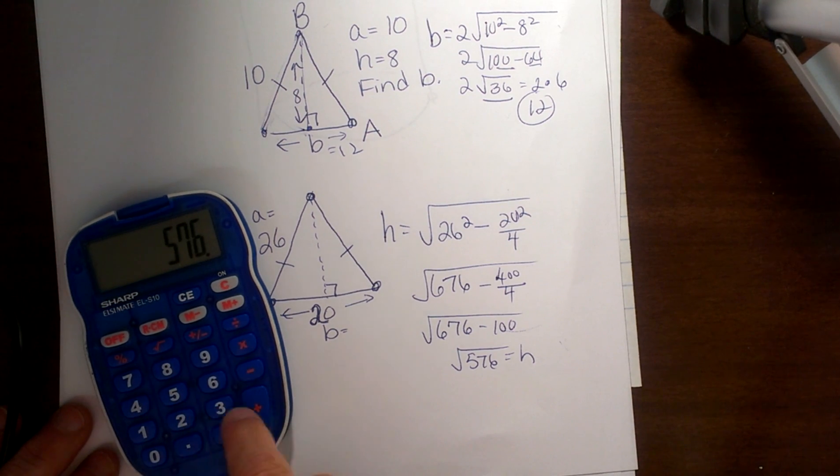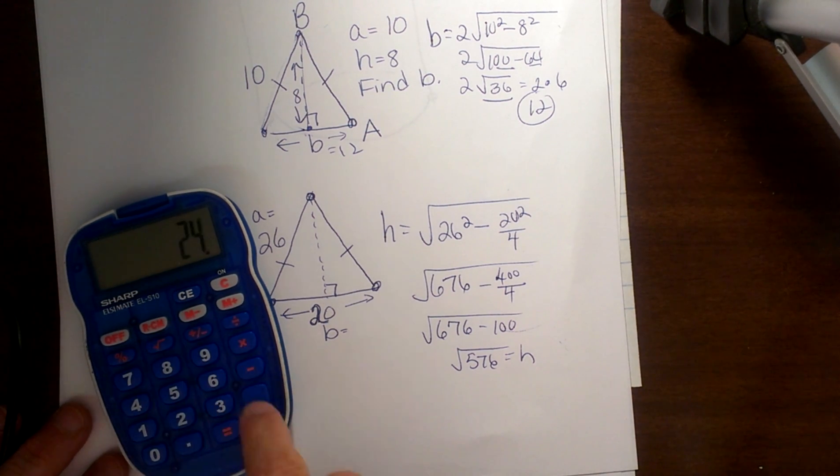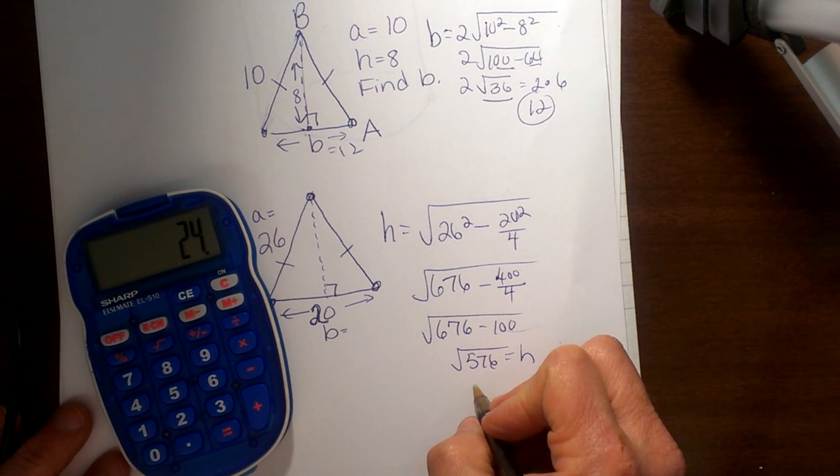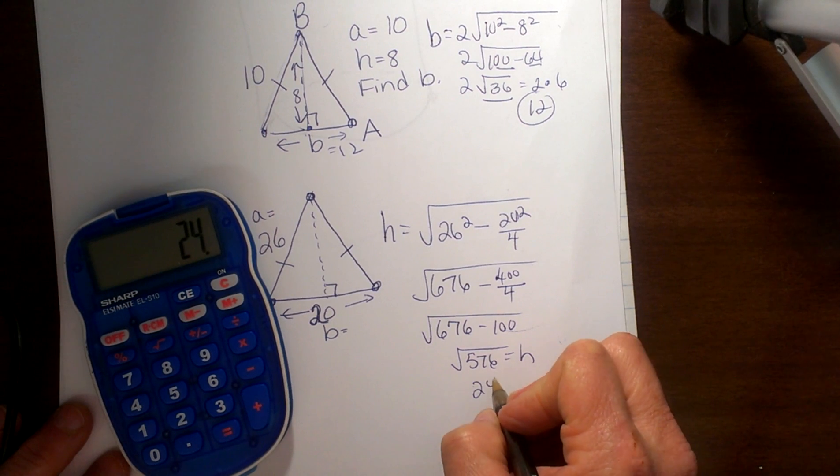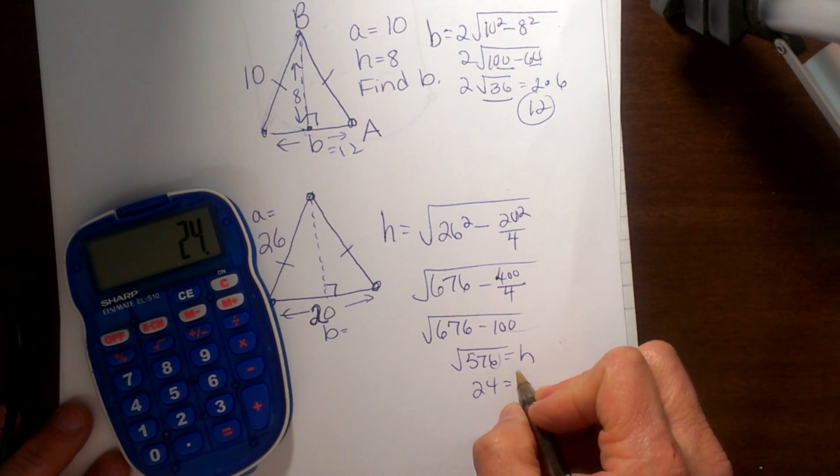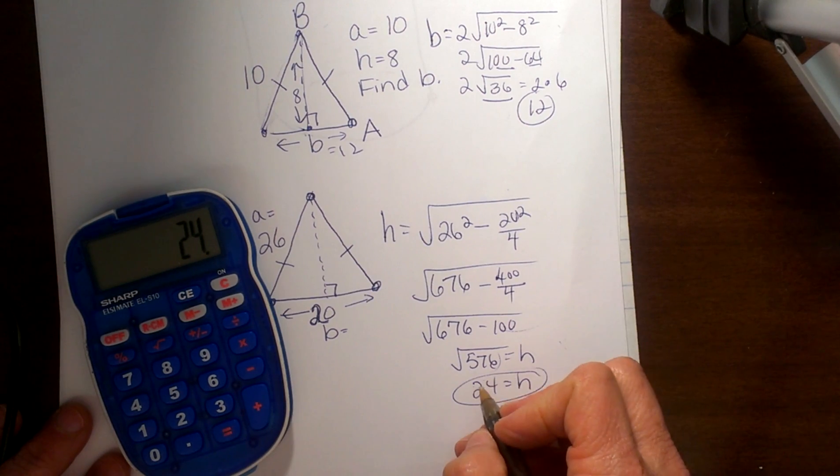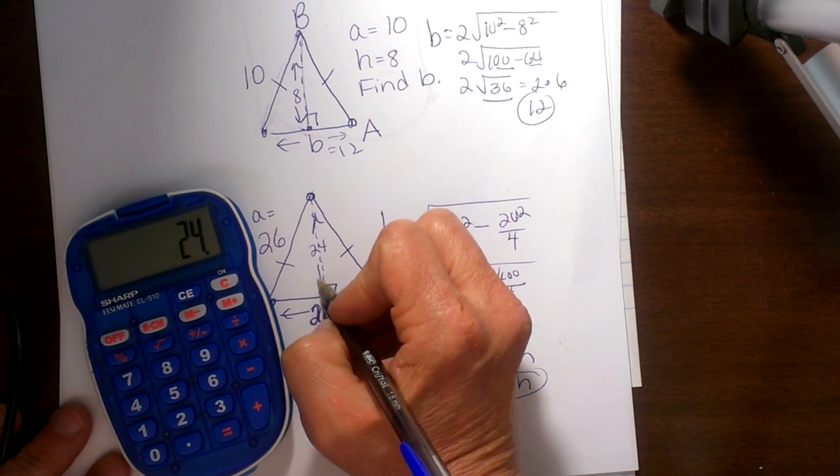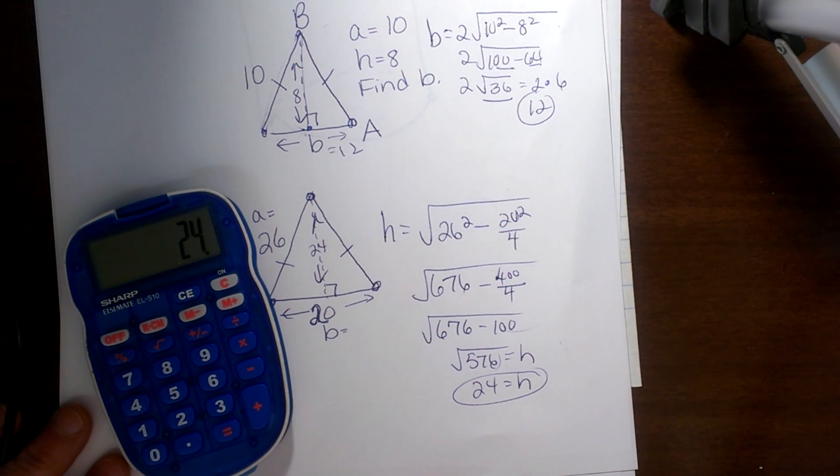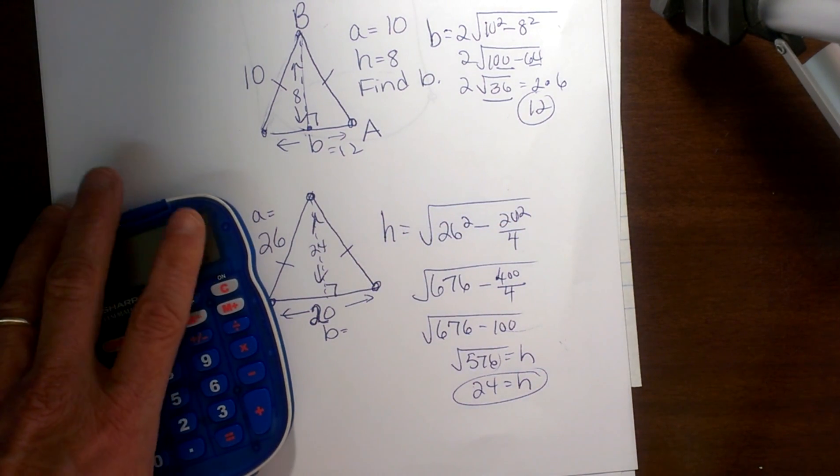Now let's see if we can't simplify that. That simplifies to just 24 because that is a perfect square. So we take the square root of that, and that means the height is 24. So the height right here would be 24 using our handy dandy little shortcut formula. Hope this video was helpful.